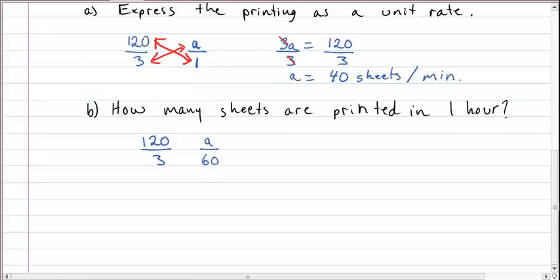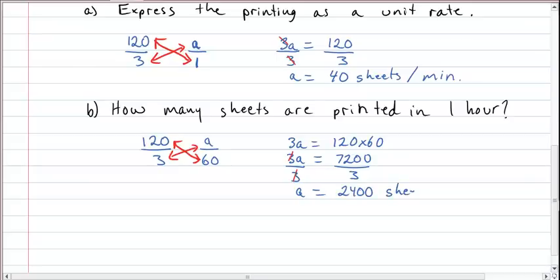So we can simply do the same thing. We cross multiply. There's a number of different ways to do this, but I'm going to show you this way just to stay consistent, so that once you learn this, you can apply it across many different types of problems. So we have 3a equals 120 times 60. So you would do that on your calculator. 120 times 60 is 7200 equals 3a. And we divide both sides by 3. Because that allows us to cancel out the 3 here. And we get a equals 2400, 2400 sheets per hour.